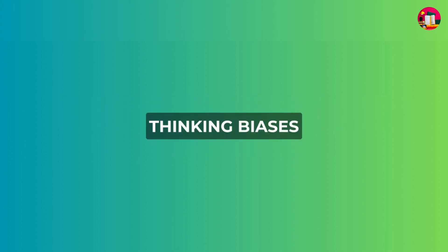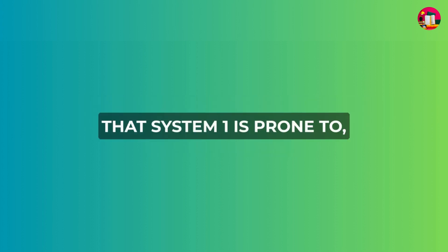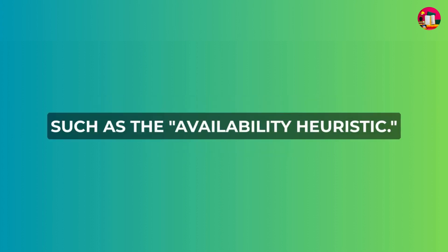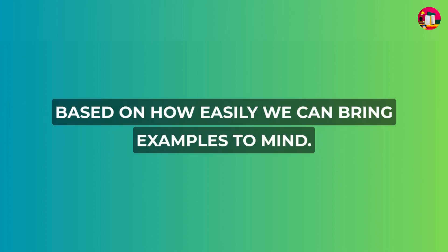Thinking biases. Kahneman dives into various thinking biases that System One is prone to, such as the availability heuristic. This occurs when we judge the likelihood of an event based on how easily we can bring examples to mind.